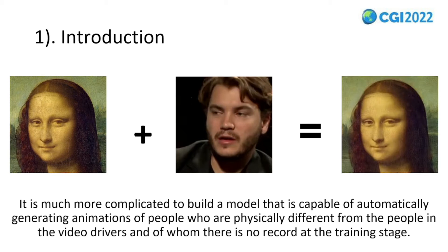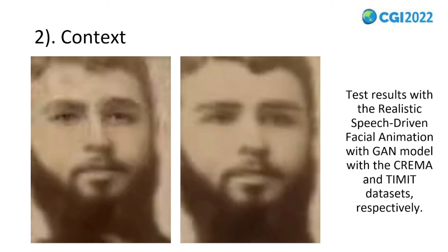Therefore, it is more complicated to build a model capable of automatically generating animation of people who are physically different from the people in the video drivers, and of whom there is no record in the training stage. Although there are currently models capable of generating facial animation automatically using only a target image that differs from those used in the training stage, they share two problems: the animations they generate are of very low resolution, and they require a large amount of training data to generate good results.